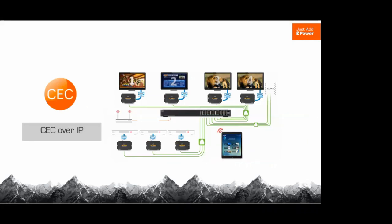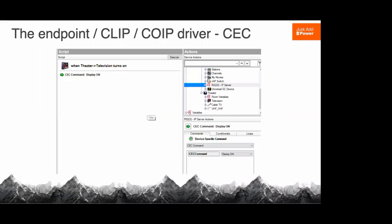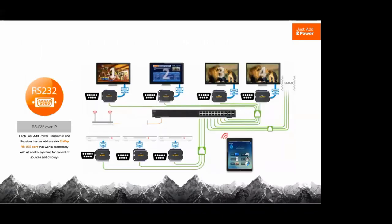Now we'll talk about what control we carry over the network. One method is CEC — every Just Add Power device has the ability to send CEC commands. We initiate the command from the control system, tell it which Just Add Power device to come out of, and send it directly through the HDMI cable. We've had extremely good luck with basic functions: on/off, mute, volume, input selection. We don't recommend it for deep smart TV app functions, but for simple zones that just need on/off, all the commands are built into our driver.